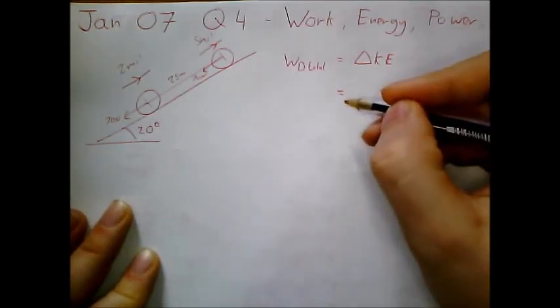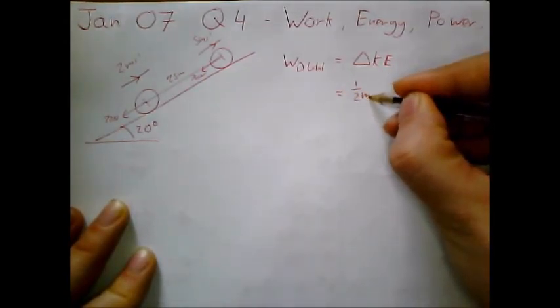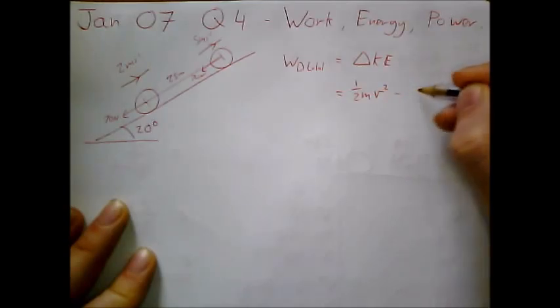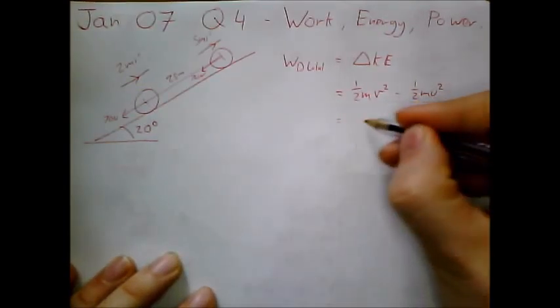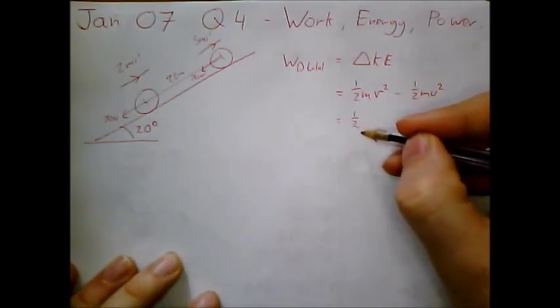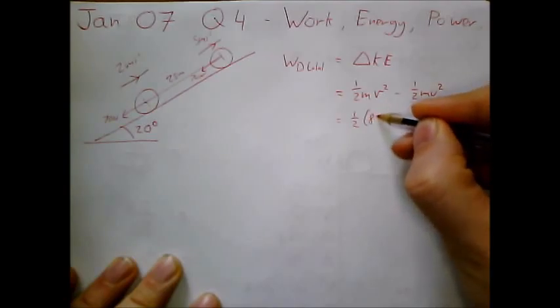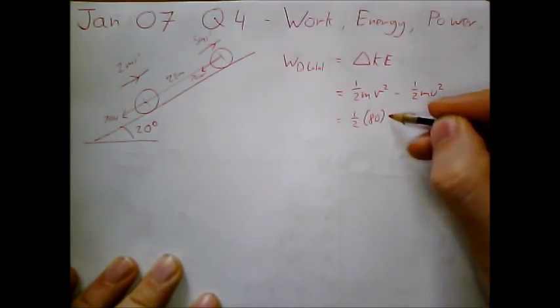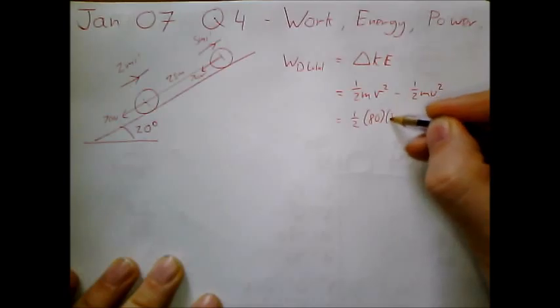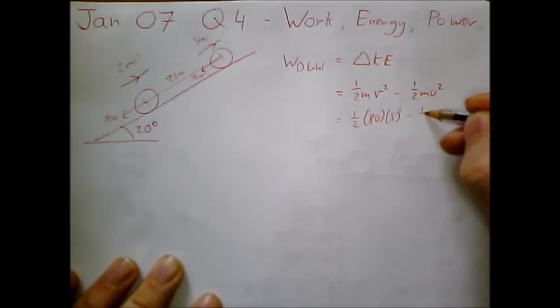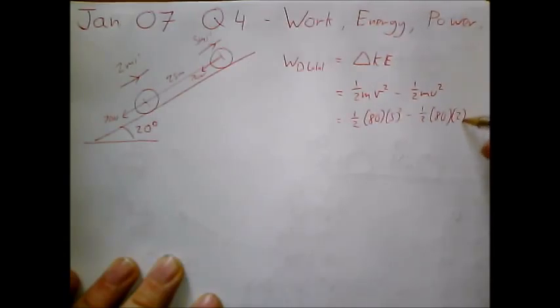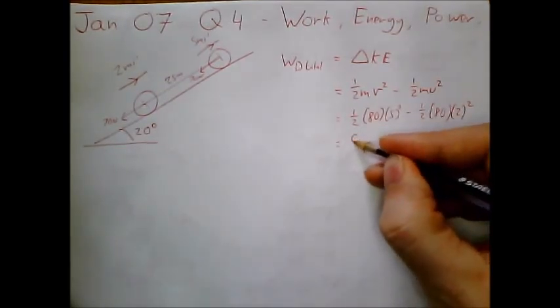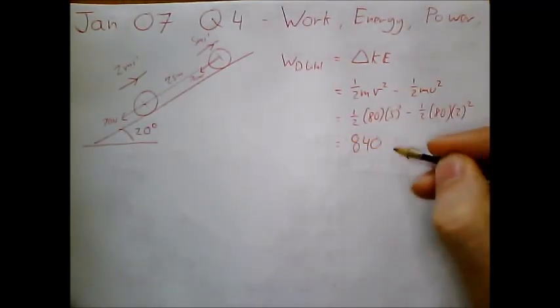So let's get to it. So we have half mv squared minus half mu squared. So this is a half of our skier is 80 kilograms. Half of 80 times 5 squared minus half of 80 of 2 squared. And we should find the work done of the whole system to be 840 joules.